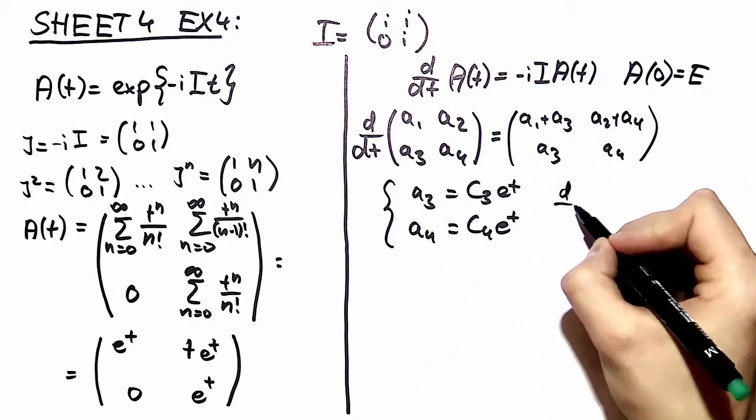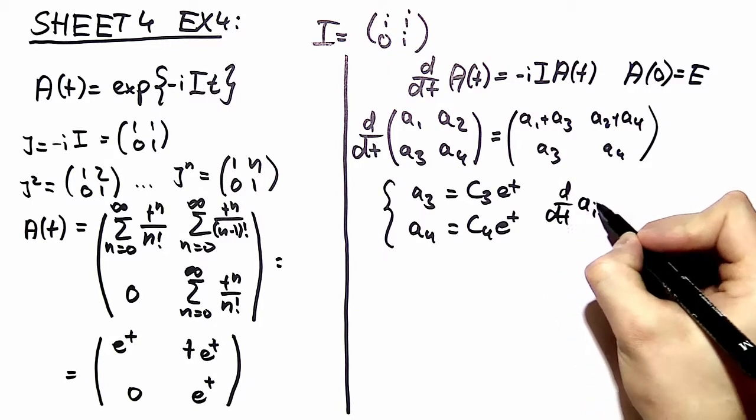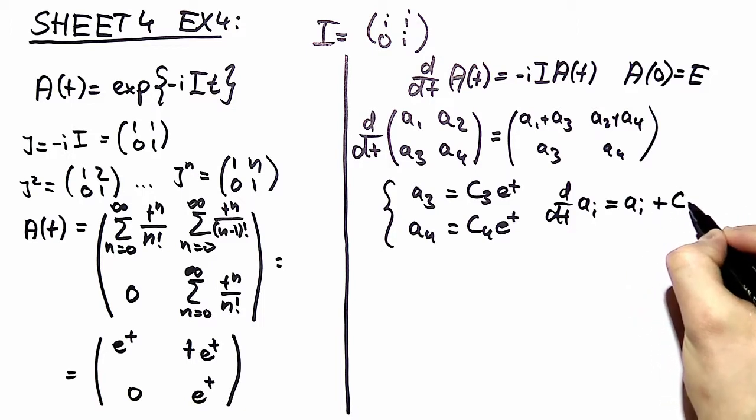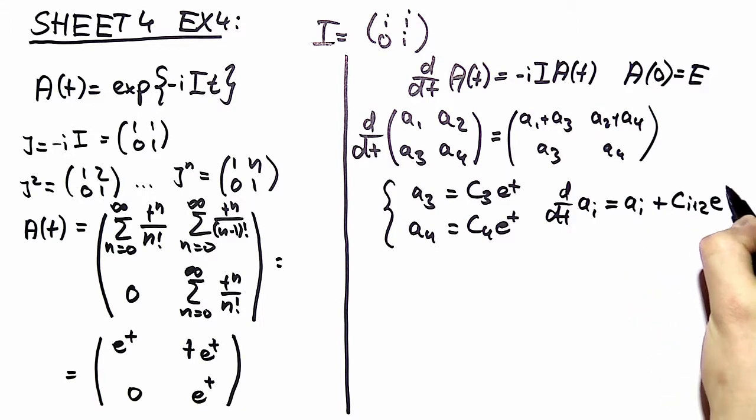two differential equations where i can be equal to 1 or 2. We have ai dot plus ci plus 2 e to the t.